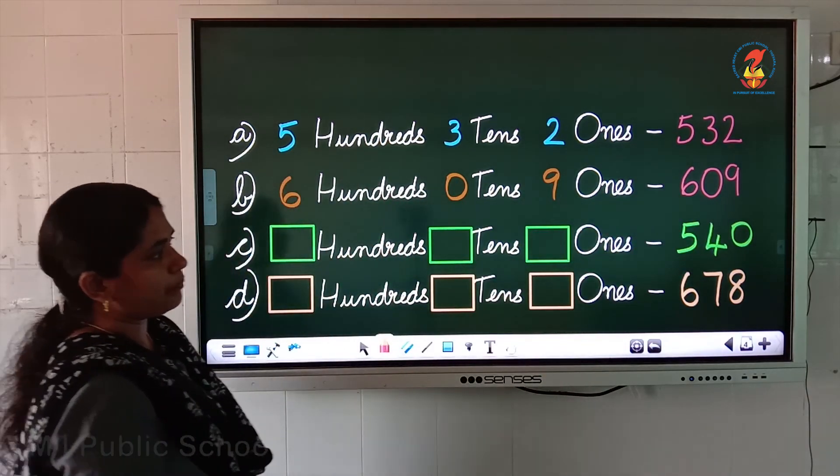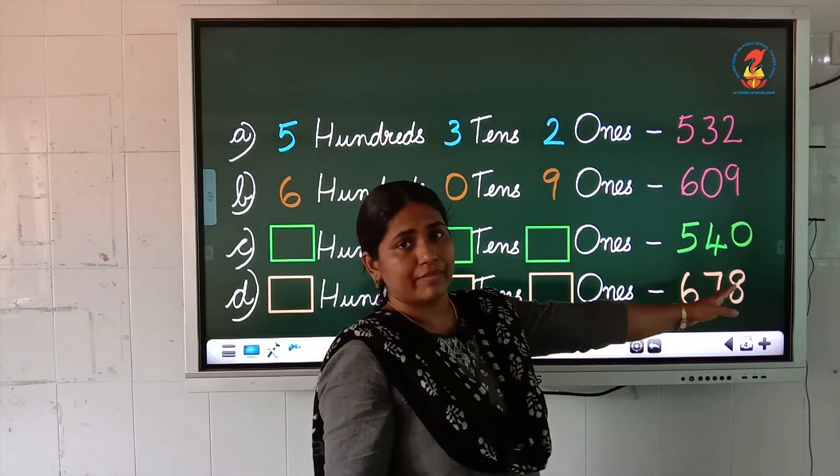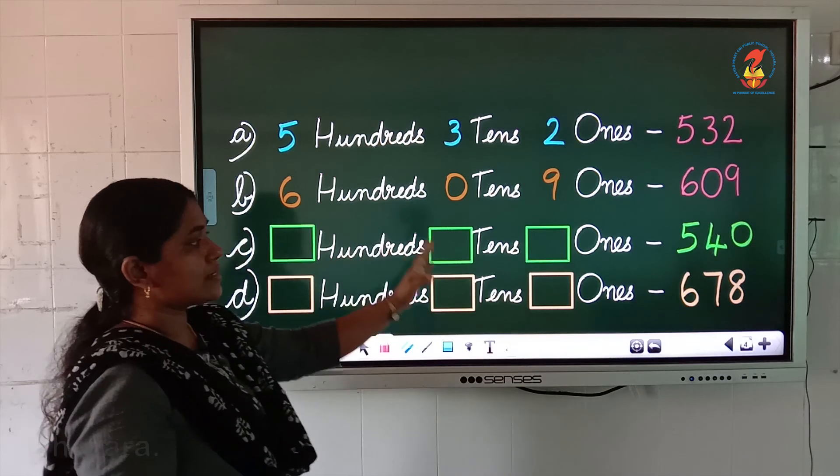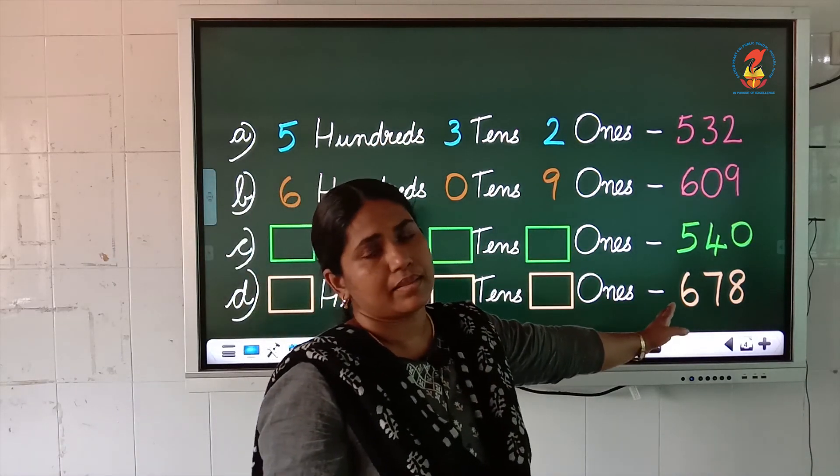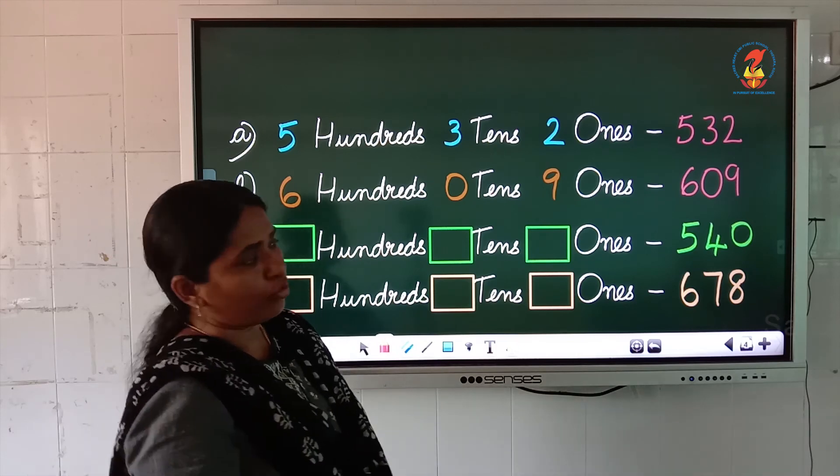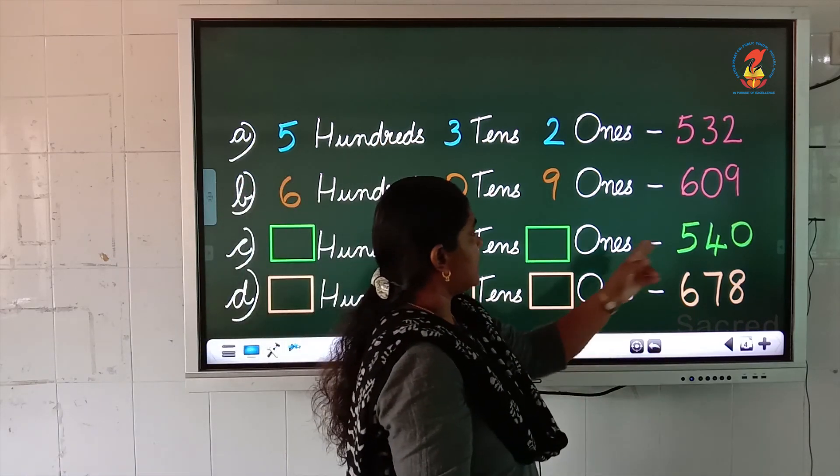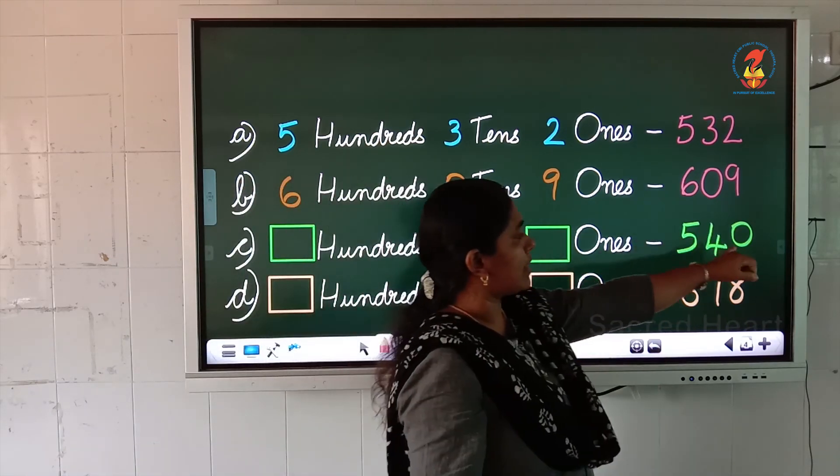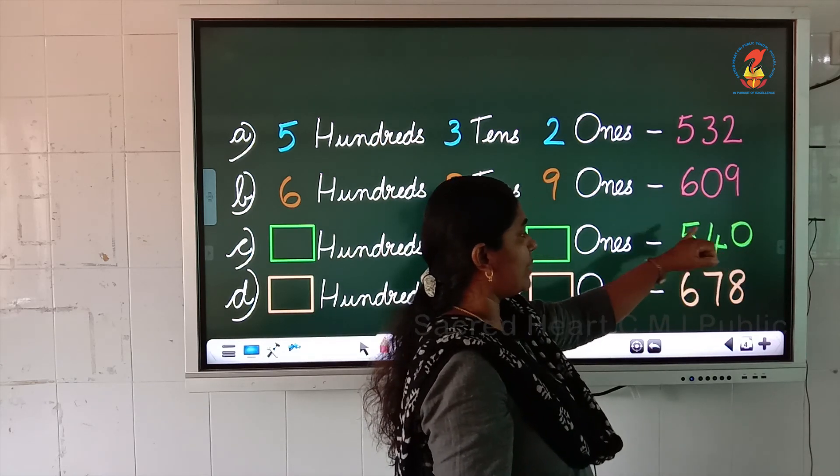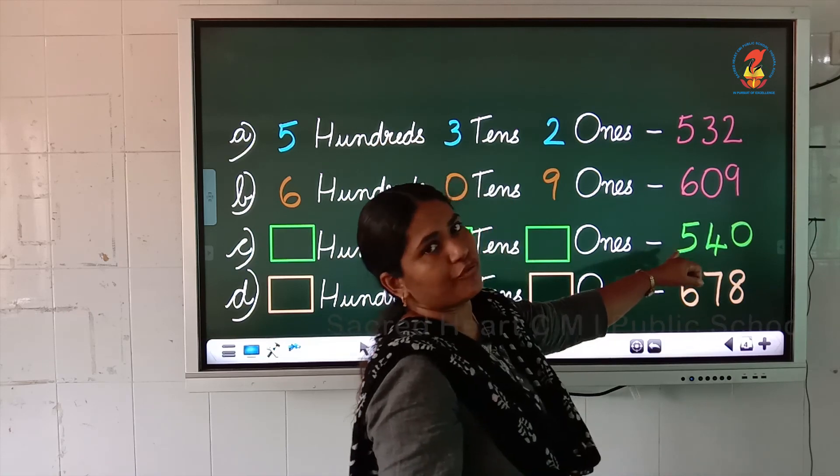Now, the next question. The numbers are given here. You have to find out how many 100s, 10s and 1s are there in each number. That means you have to write the expanded form. So, children, look at each and every place. How many 1s are here? 0. How many 10s are here? 4. How many 100s are here? 5.